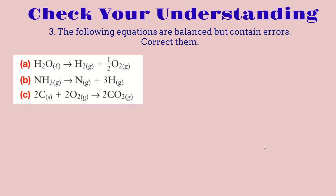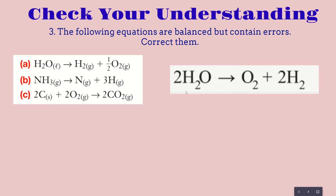For question number 3, the following equations are balanced but contain errors, and it's our job to correct them. For the first one, we have water equals hydrogen plus oxygen. The problem is that there is a fractional value — inside chemical equations we should not have fractional values, we would rather have whole numbers. To fix this, we multiply everything by two. The correct answer would be 2H₂O = O₂ + 2H₂.